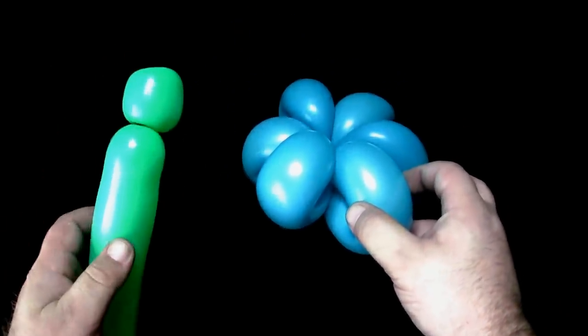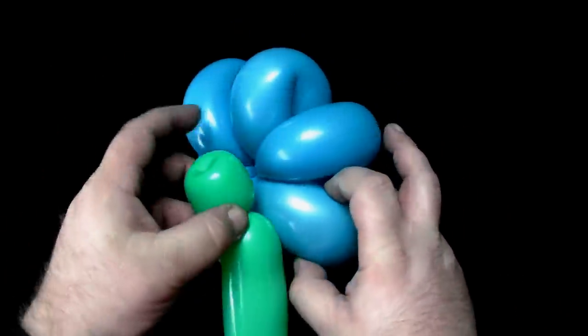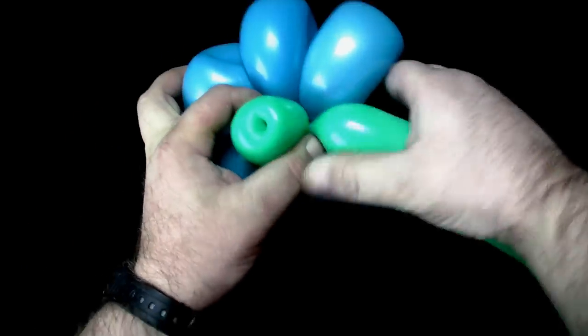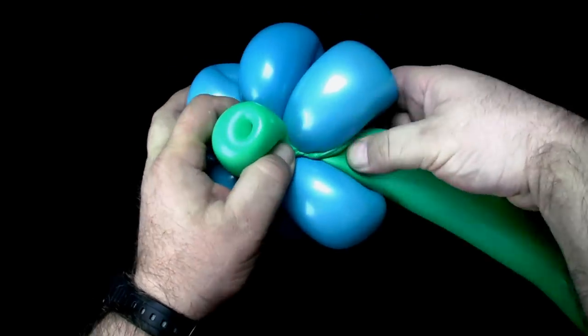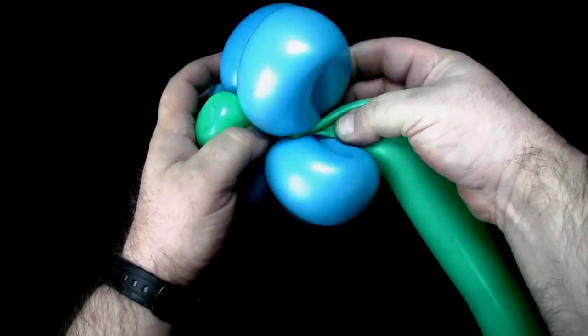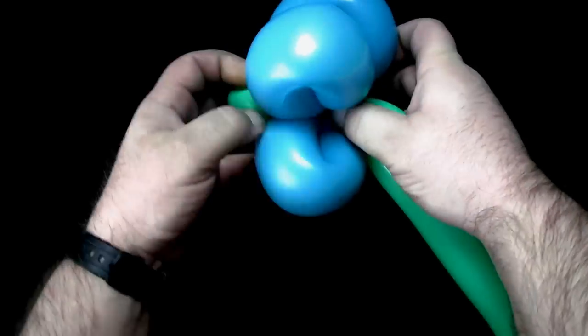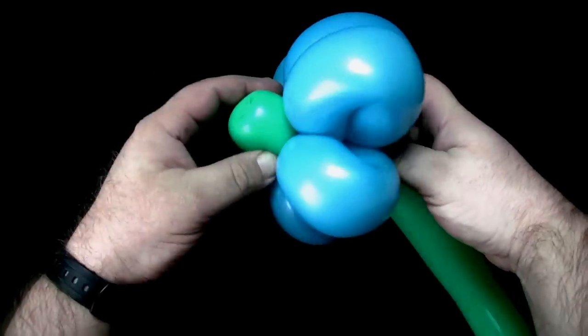It is now time to join the two balloons together. Place the tulip twist in the center of the six petals. Stretch the balloon you are using for the stem along the center twists of the petals until the balloon continues from the middle of the opposite side.